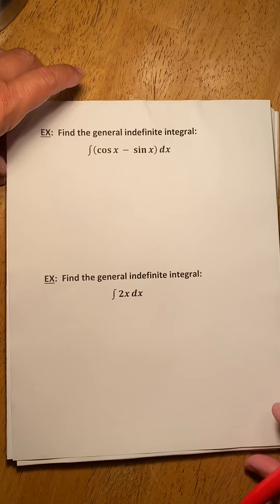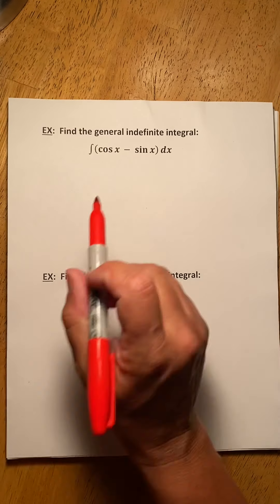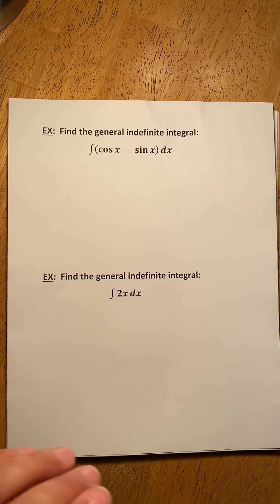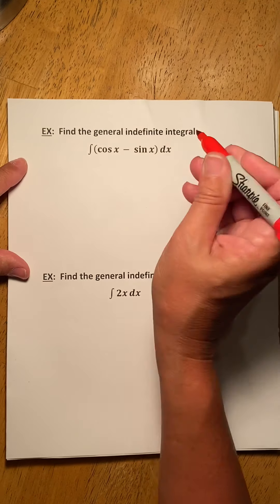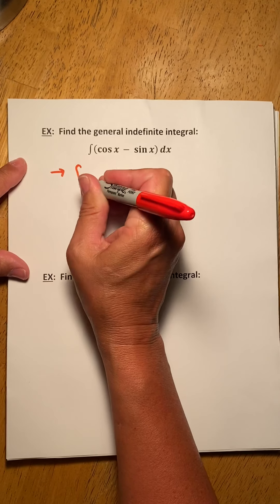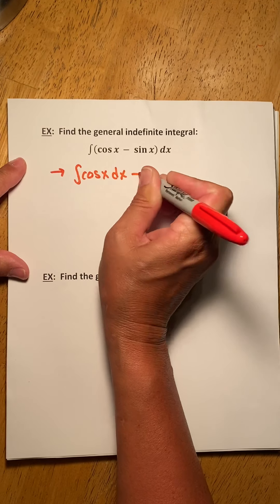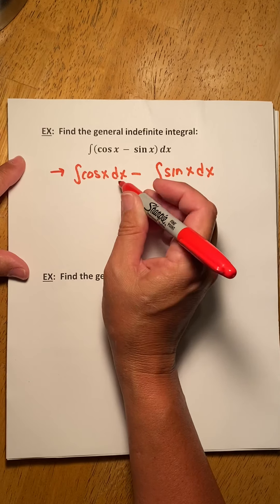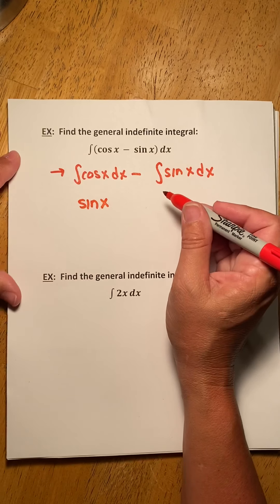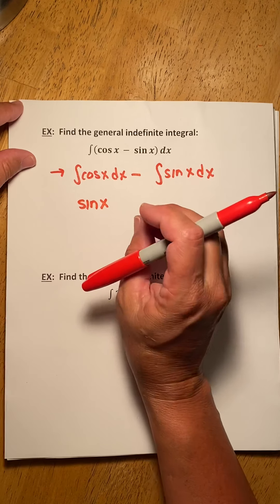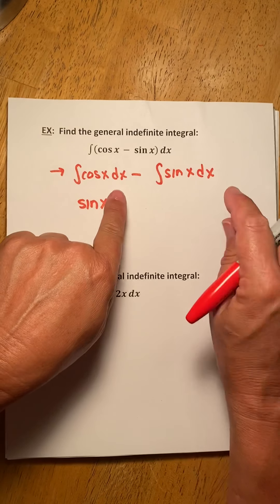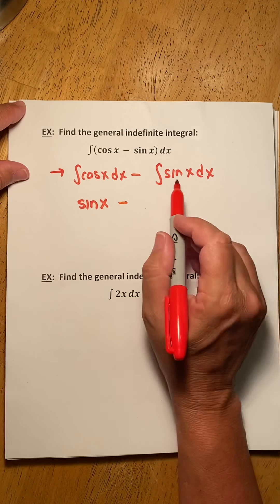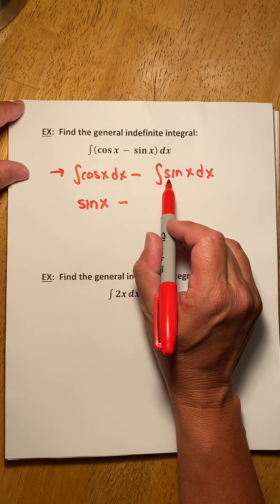So let's suppose we're given this example: find the general indefinite integral of cosine minus sine. We can split this into the indefinite integral of cosine minus the indefinite integral of sine. The indefinite integral of cosine is sine of x. We could put a plus constant for each piece, but we group them and put one constant on the end. So then, what function's derivative is sine of x?